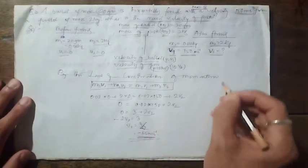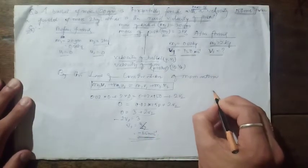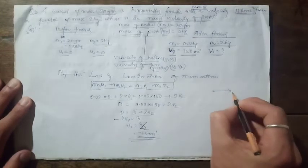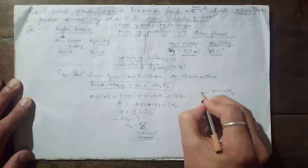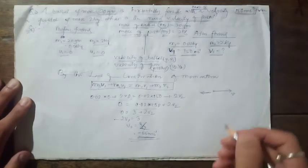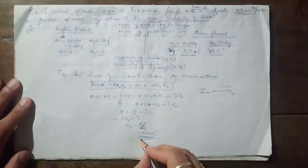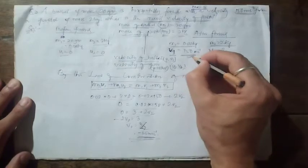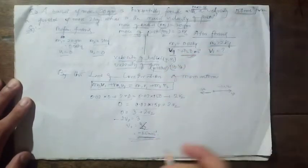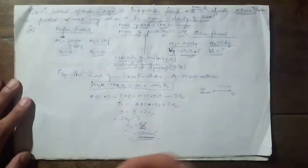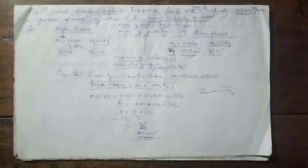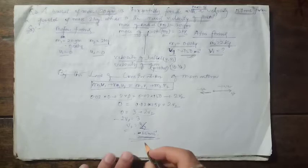The negative sign indicates the backward direction. The bullet moves forward (positive direction) and the gun gets a backward jerk (negative direction). That's why the recoil velocity is negative — it is in the opposite direction to the bullet's motion.